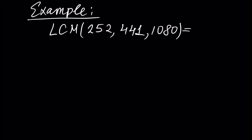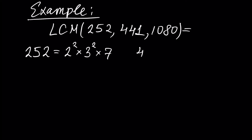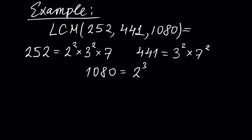Using prime number factorization, we write the factorization for each of our numbers. For the first number: 2 squared times 3 squared times 7. 441 is equal to 3 squared times 7 squared. And 1080 is equal to 2 cubed times 3 cubed times 5.